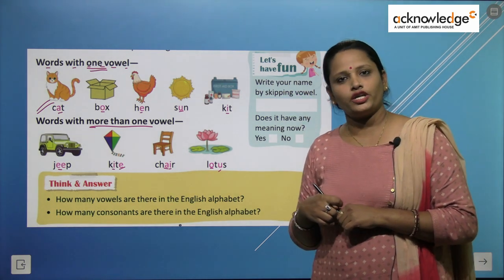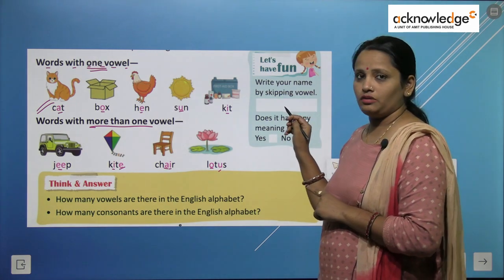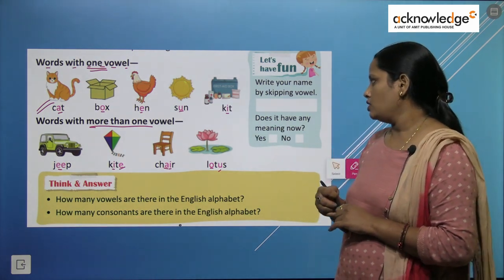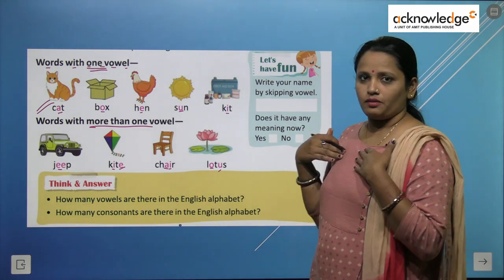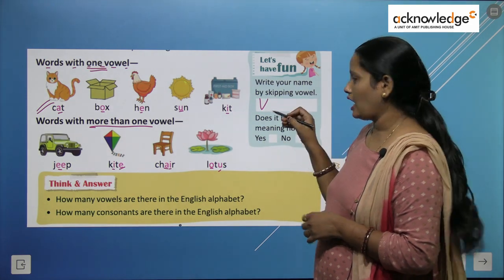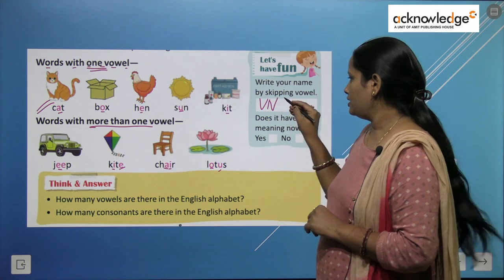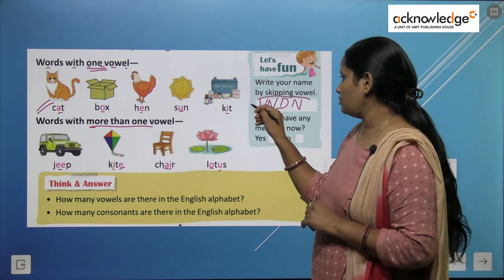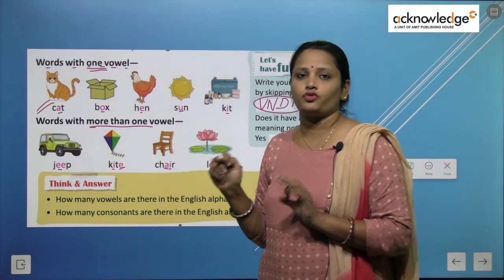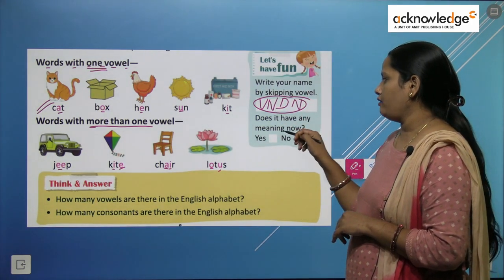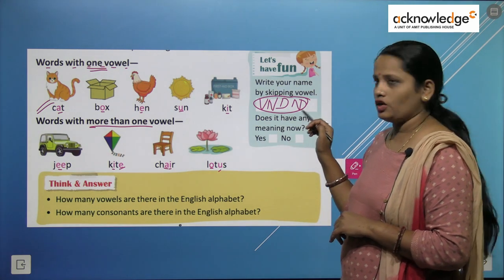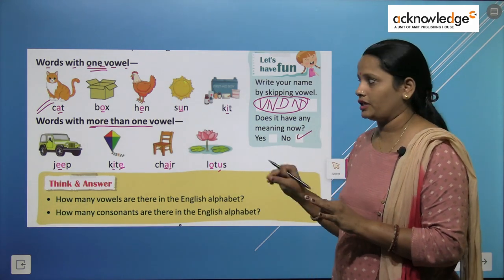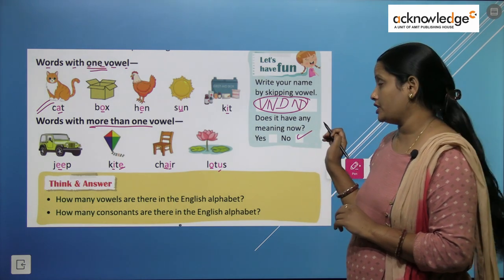Now, write your name by skipping the vowels. Whatever your name is, you have to write it here but skip the vowels. For example, my name is Vandana. I write V, skip A, write N, write D, skip A, write N, skip A. So I get V-N-D-N after skipping all the vowels. Does it have any meaning now? No! You also have to write your name after skipping the vowels — it's a very interesting activity.